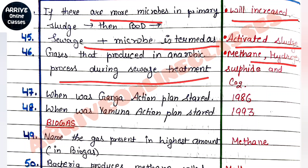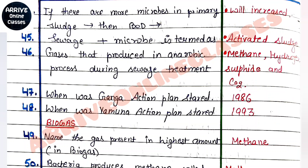Next question: when was the Ganga Action Plan started? It was in 1986. When was the Yamuna Action Plan started? The answer is 1993.